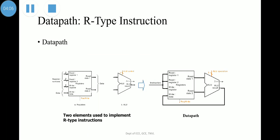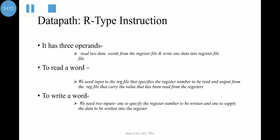This shows the data path for the R-type instruction. We need two elements to implement R-type instructions: the register file and the arithmetic and logic unit. R-format instructions have three register operands, so we need to read two data words from the register file and write one data word into the register file for each instruction. For each data word to be read, we need an input specifying the register number to be read and an output that carries the value read from the registers.